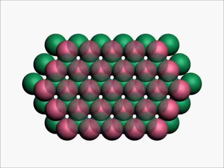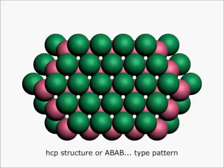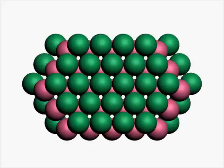If the spheres of the third layer are placed over the triangular voids of the second layer which do not form octahedral voids with the first layer, then it is called HCP structure or ABAB type pattern, where the first and third layers have the same alignment.